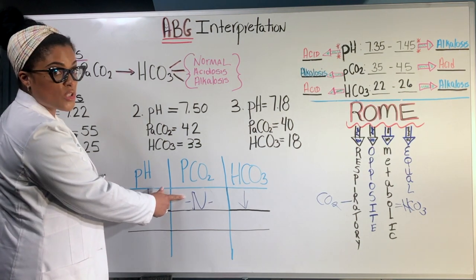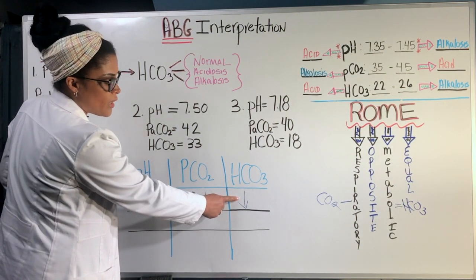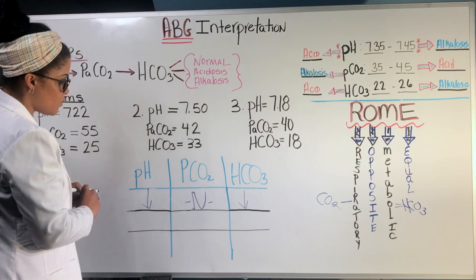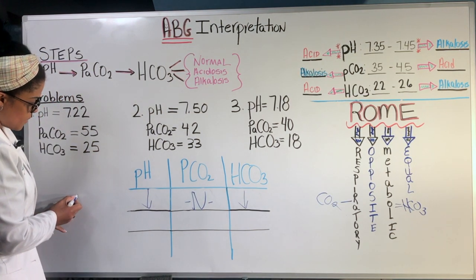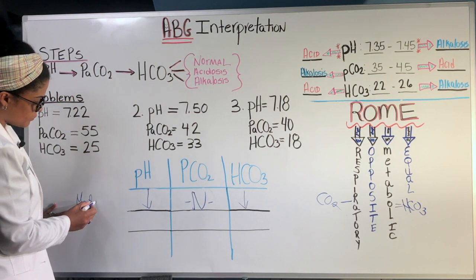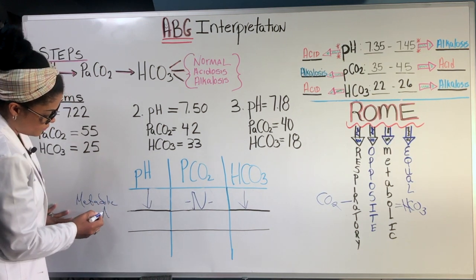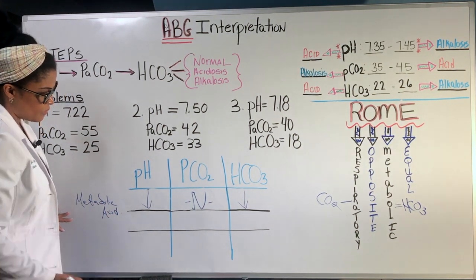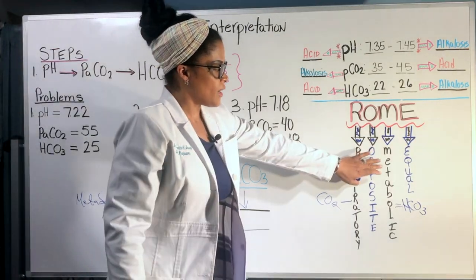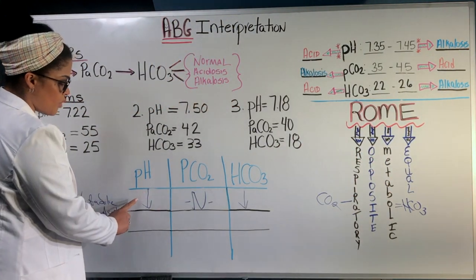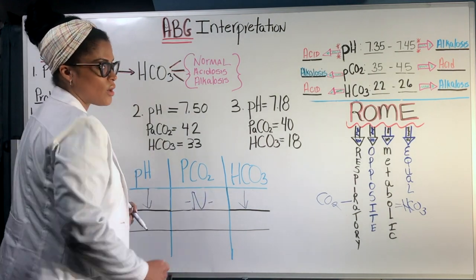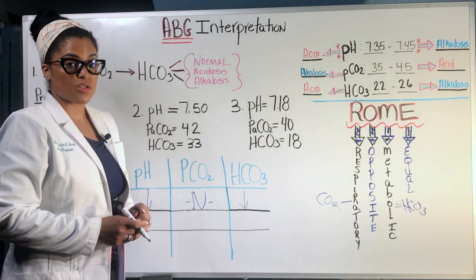The CO2 is normal. And the bicarb is low. So this is metabolic acidosis. And based on this acronym of metabolic equal, both the pH and the bicarb are moving in the same direction.